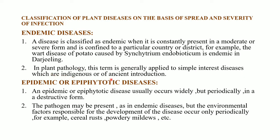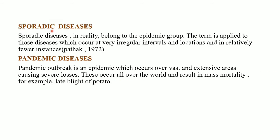In plant pathology, the term endemic is generally applied to simple interest diseases which are indigenous or of ancient introduction. Epiphytotic or epidemic diseases are those which usually occur widely but periodically in a destructive form. The pathogen may be present as in endemic diseases, but the environmental factors responsible for the development of the disease occur only periodically. Examples include cereal rust and powdery mildews.